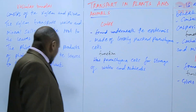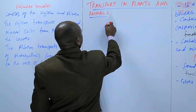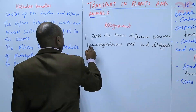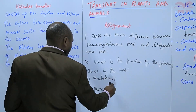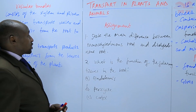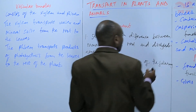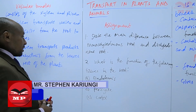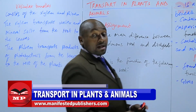We are going to have a short assignment based on this. Question one: state the main difference between a monocotyledonous root and a dicotyledonous root. Question two: what is the function of the following tissues in the root — the endodermis, pericycle, and the cortex? We are going to stop there for today. See you next time.